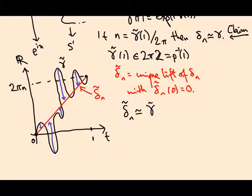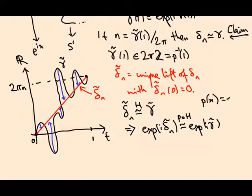So that implies that exp i delta n tilde is homotopic to exp i gamma tilde. Just by composing the homotopy, whatever homotopy this is, if we call it h, with the projection map p. Alright, p is this map. p of x is e to the i x. But this is delta n and this is gamma.